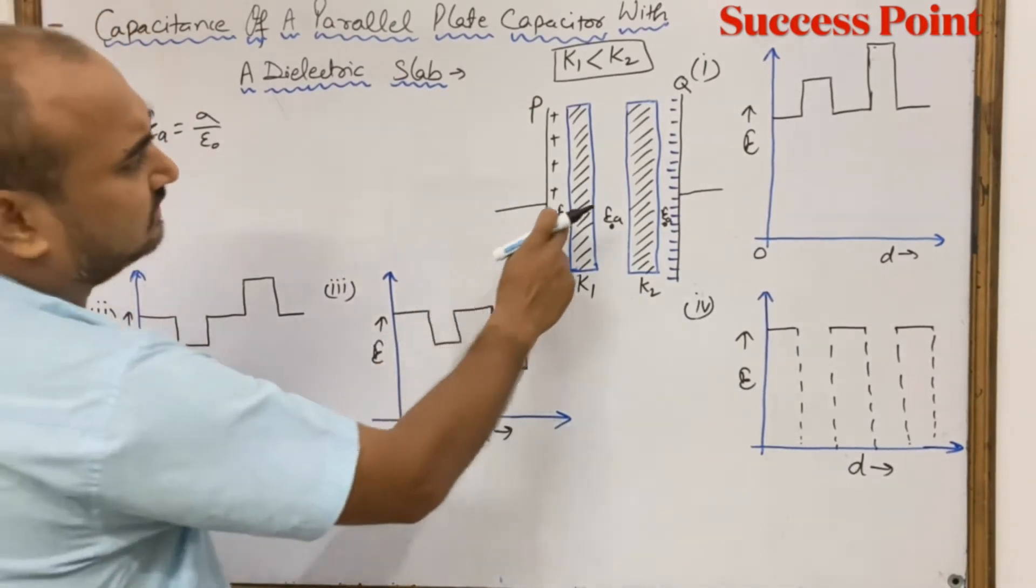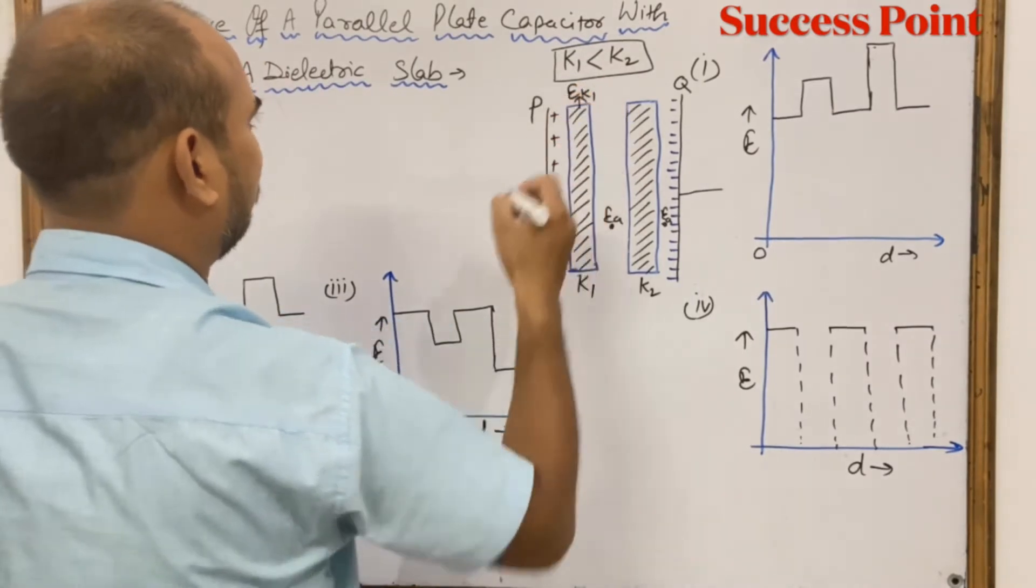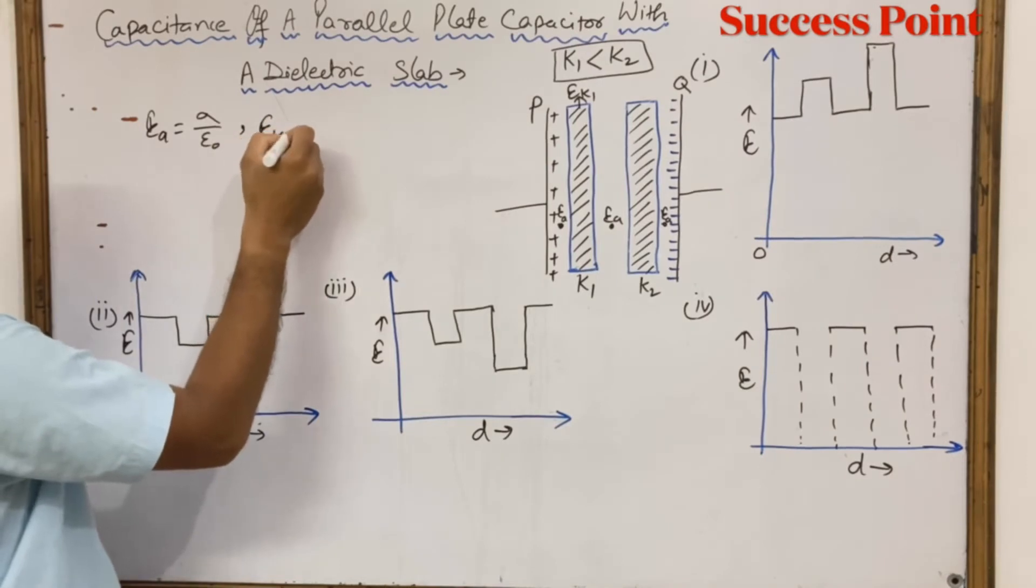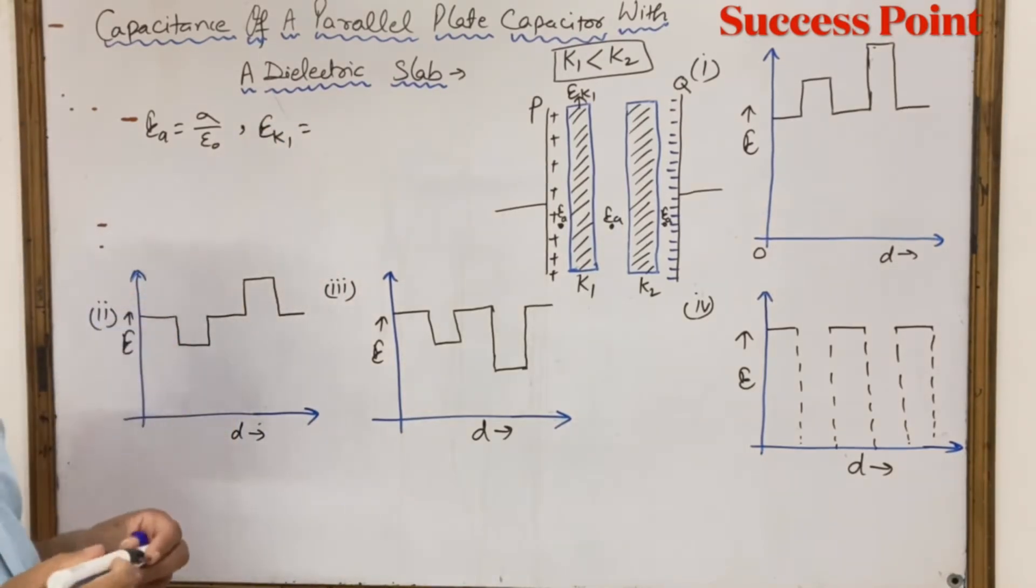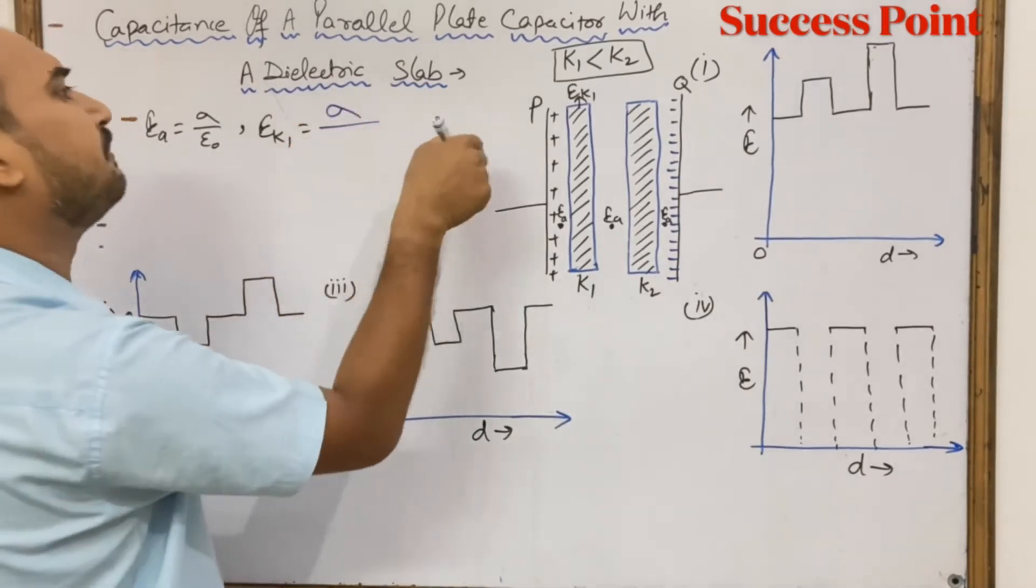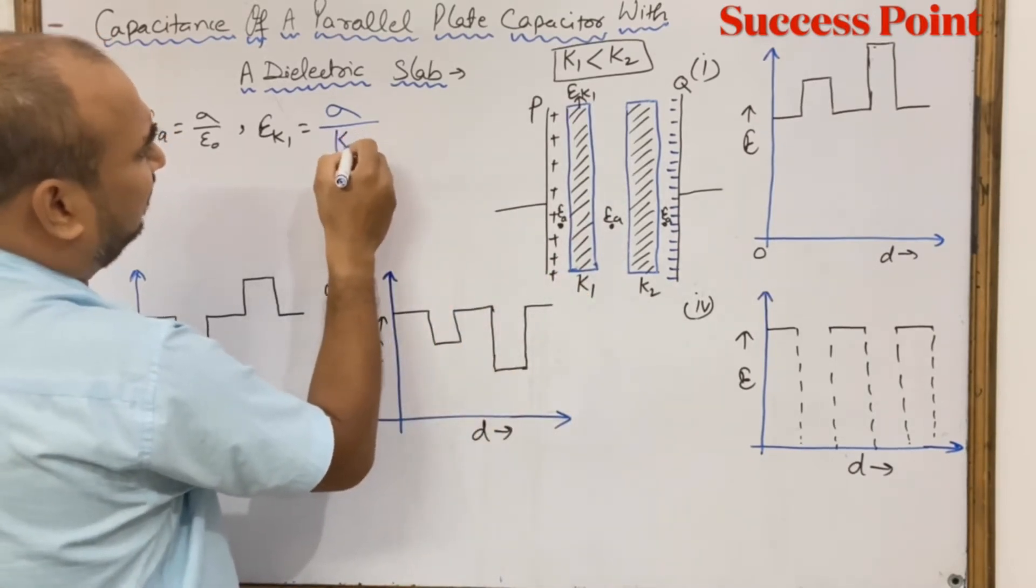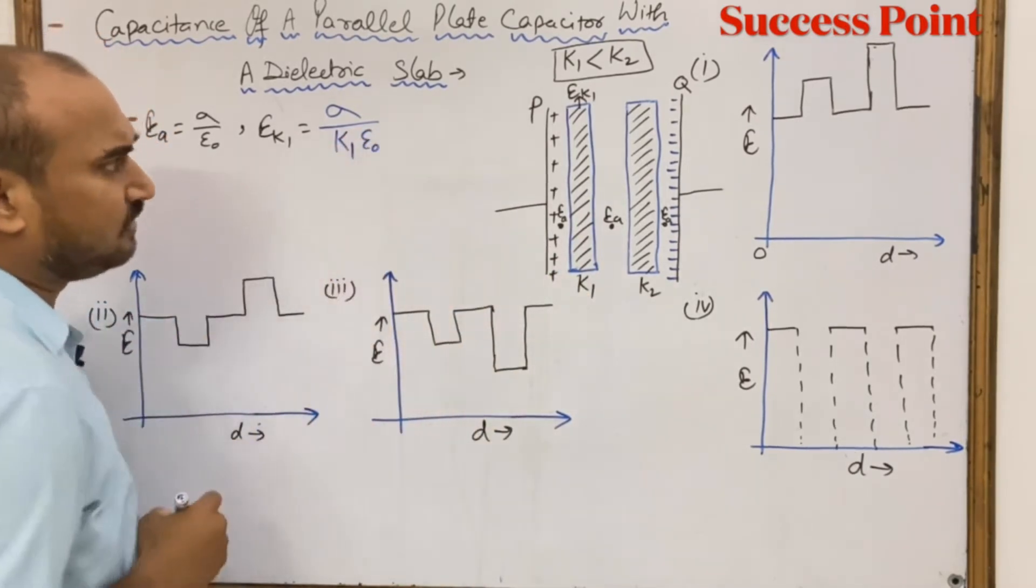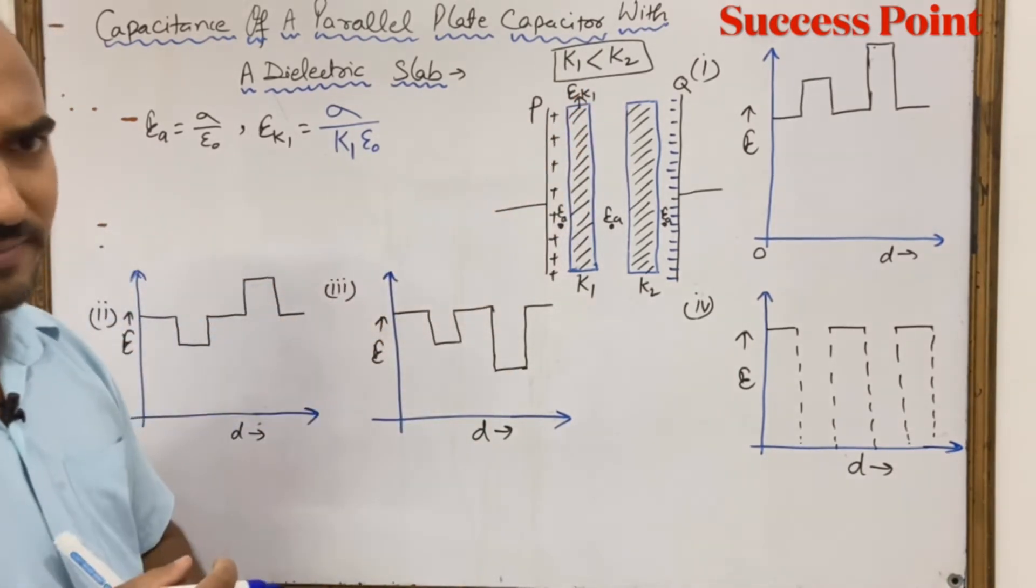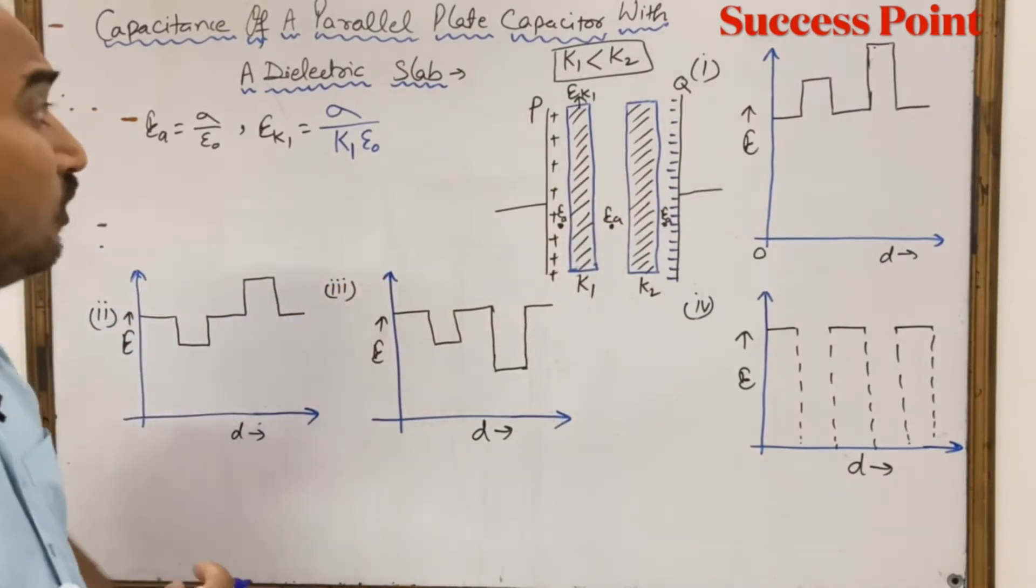Now, in the dielectric substance, the electric field is EK1, which equals Ea upon K1. When dielectric is there, the electric field becomes smaller. If we tell you the electric field, it is Ea upon K1.